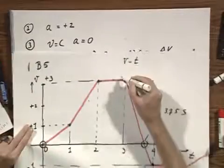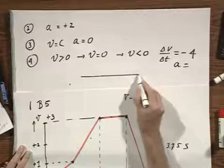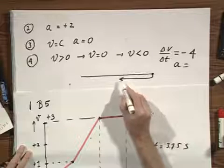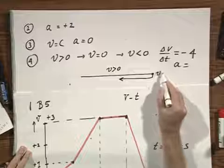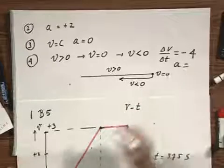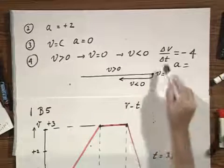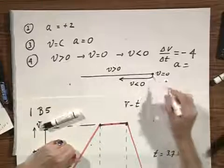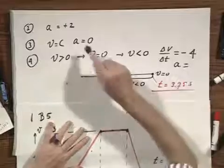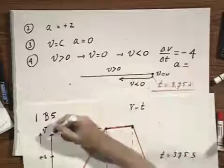What does it mean that the velocity is positive, becomes 0, and becomes negative? It means the object goes in the x direction, comes to a halt at this moment in time, and then the velocity becomes negative — first larger than 0, then equals 0, then less than 0. That's what a negative acceleration can do: it can bring the object to a hold and reverse the direction. This moment equals t equals 3.75 seconds. A positive acceleration could turn a negative velocity into a positive one.